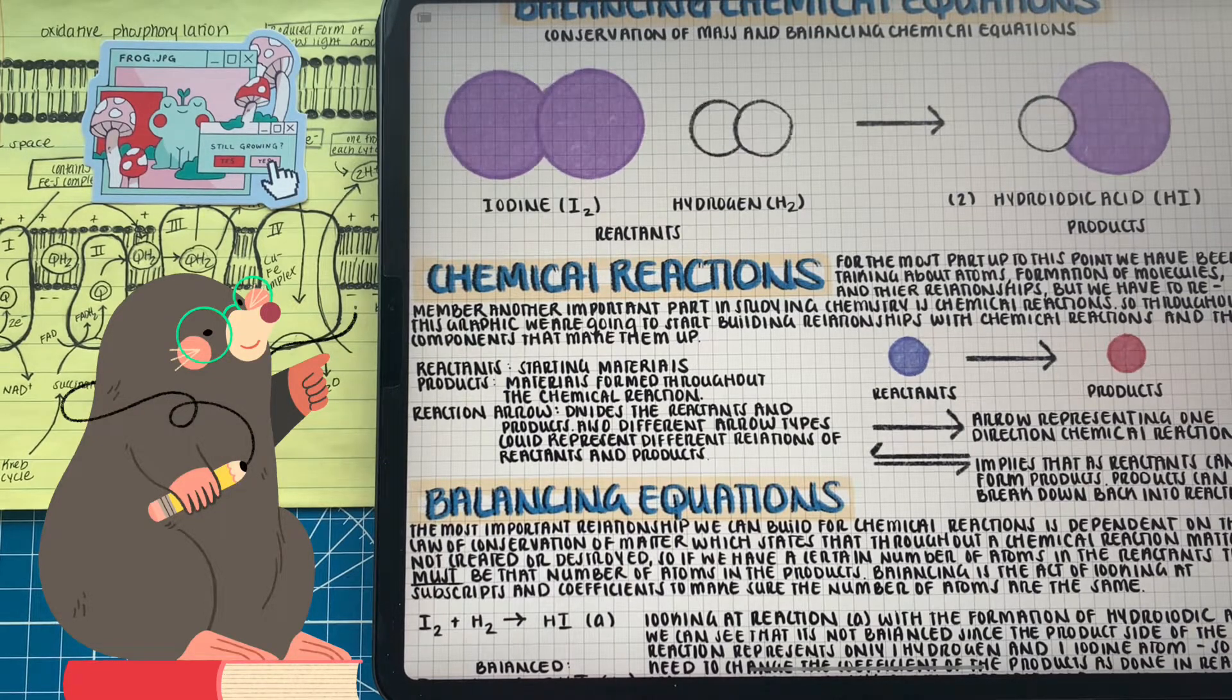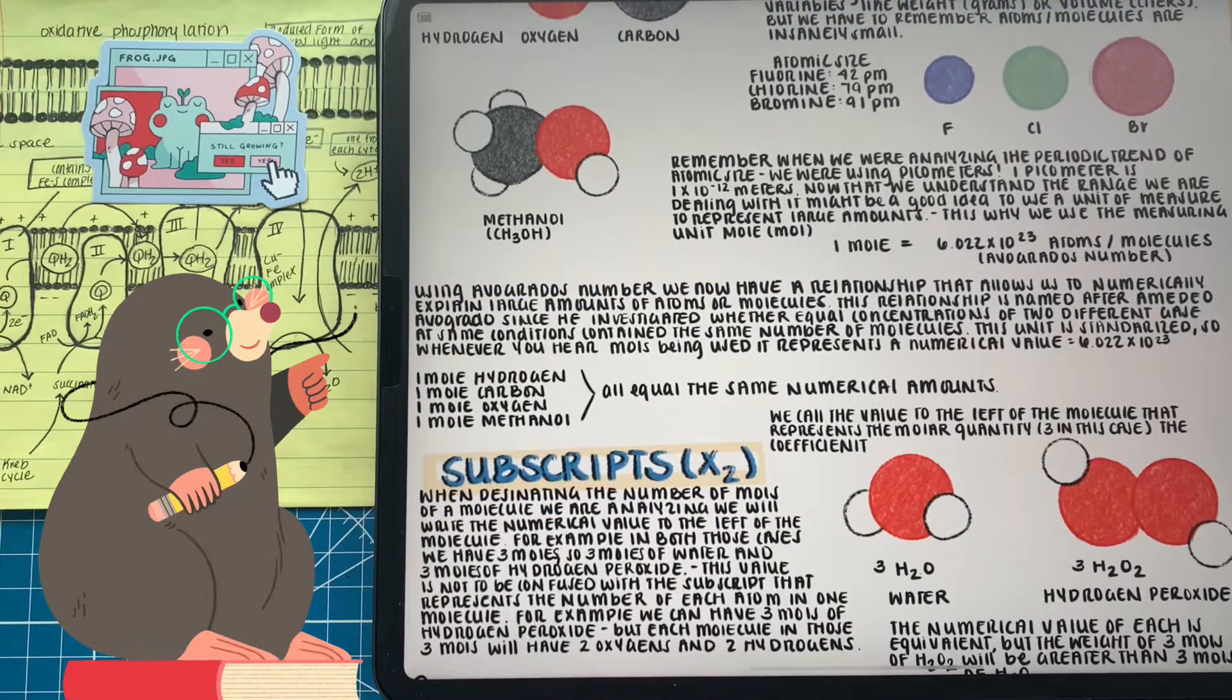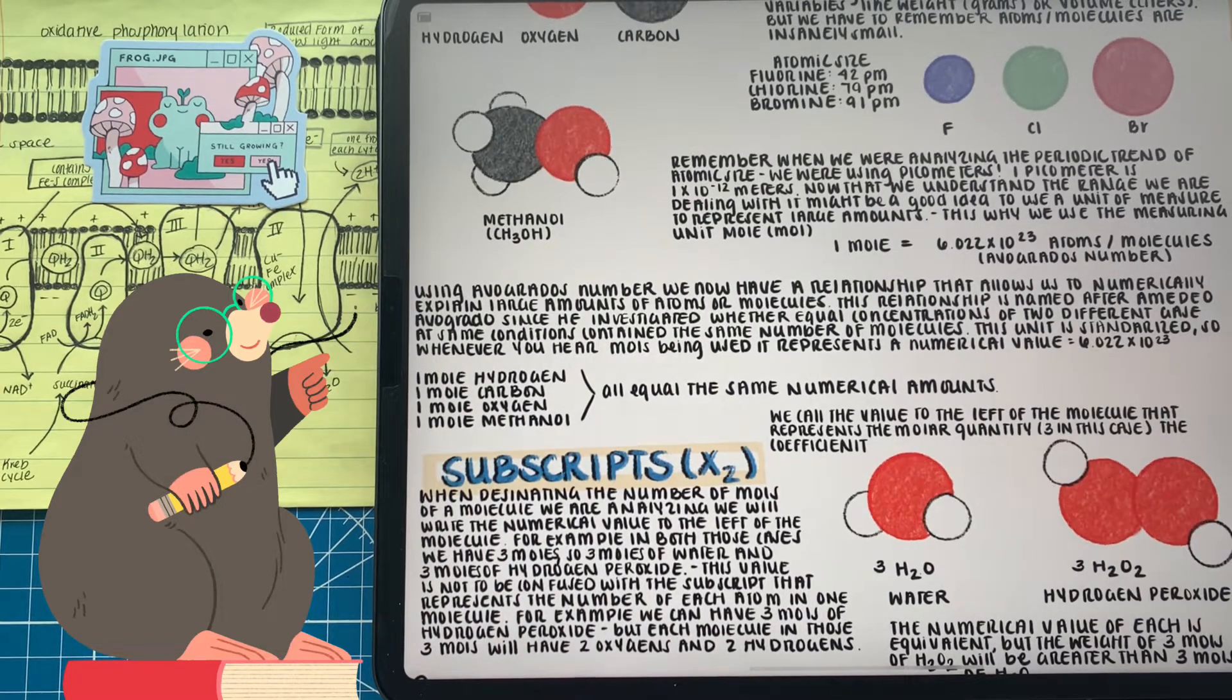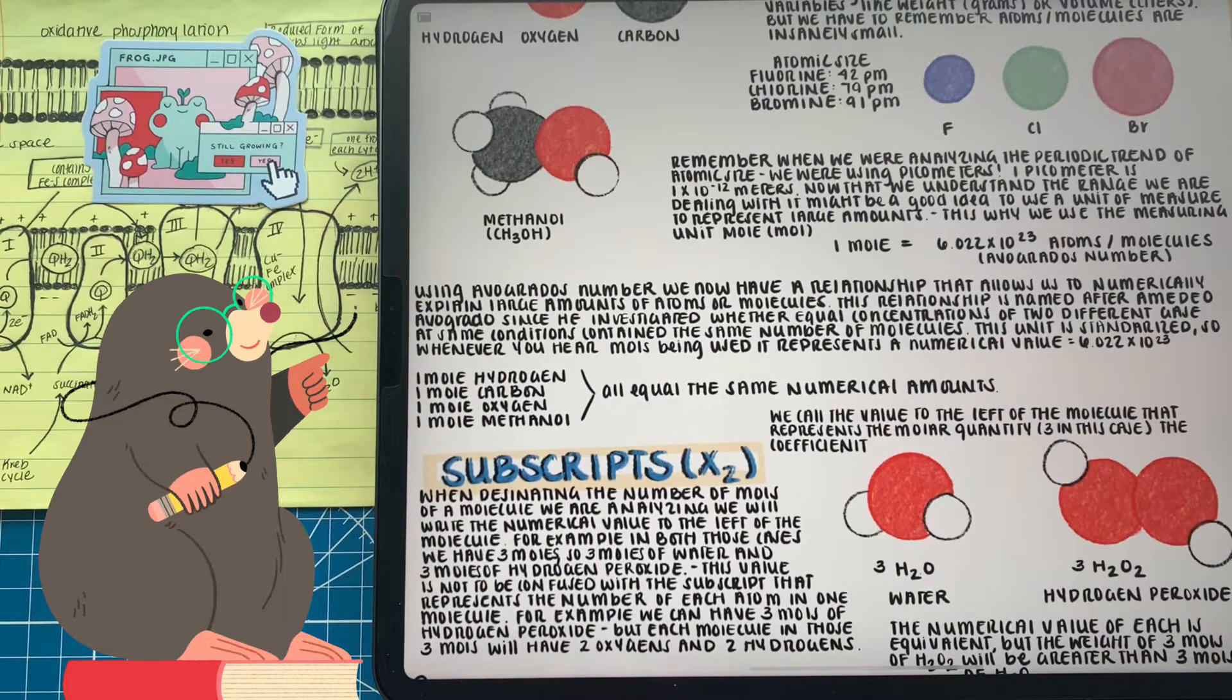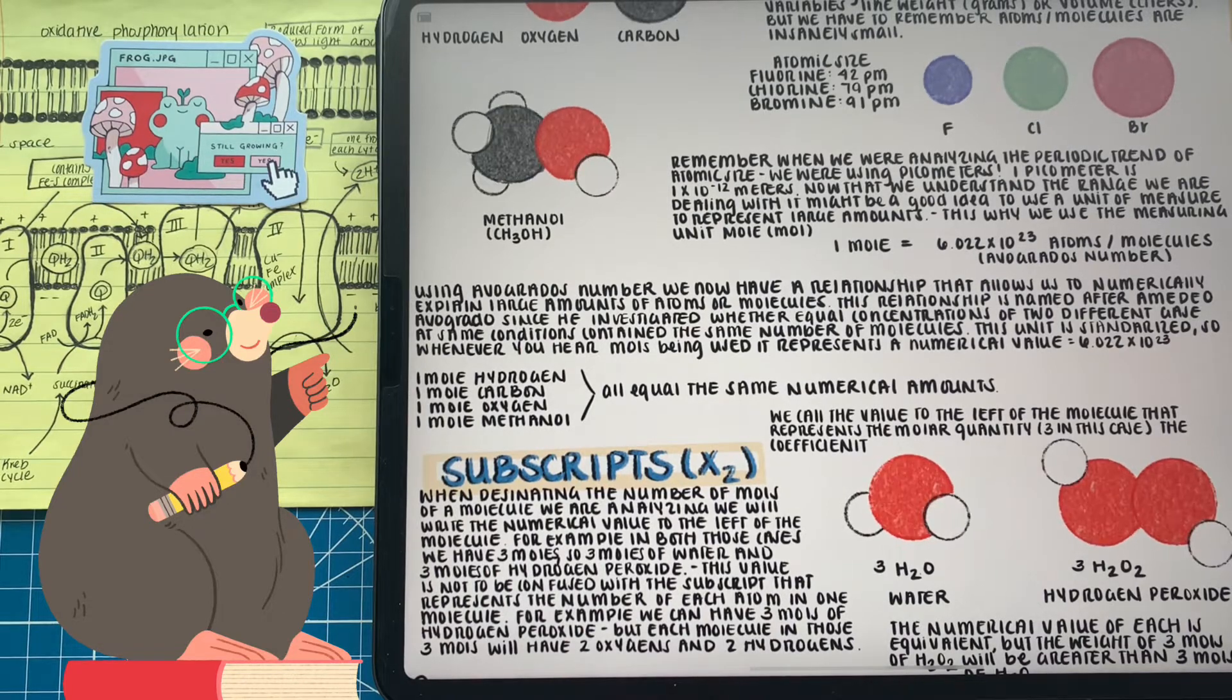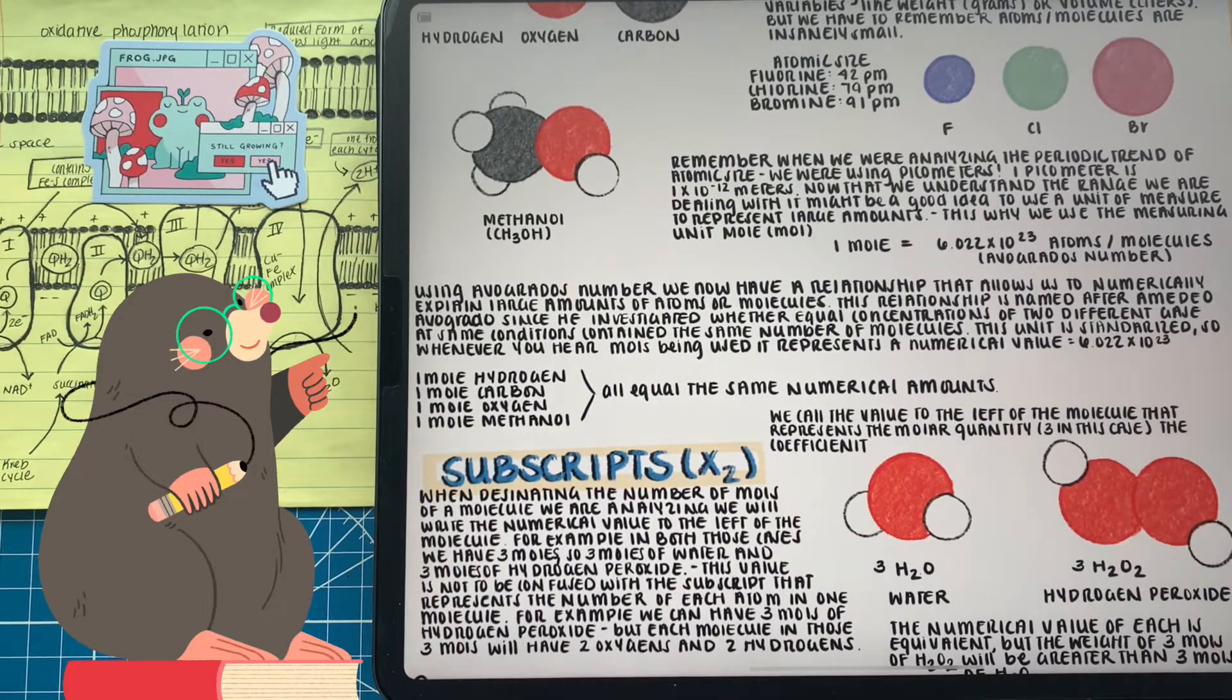The numbers that are within the molecule - we call these the subscripts - they represent the amount of atoms that are used to build up one molecule. But the numbers to the left, the coefficients, they represent the amount of moles of that molecule we have. For example, we have three moles of water and three moles of hydrogen peroxide. It's the same amount of stuff, but one molecule of hydrogen peroxide has two oxygens and two hydrogens, whereas one molecule of water is one oxygen and two hydrogens.